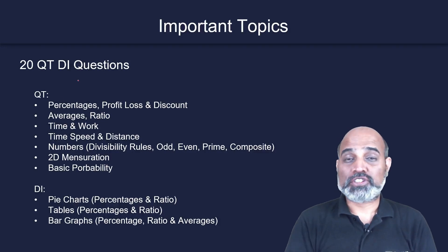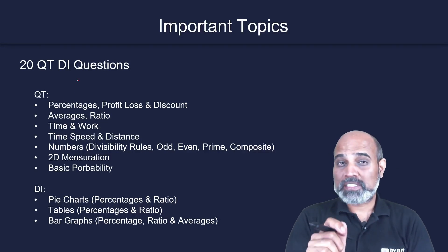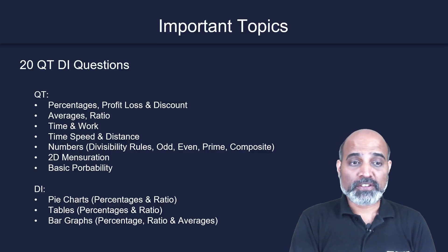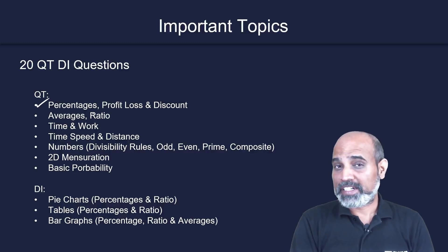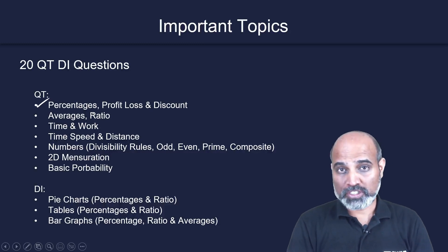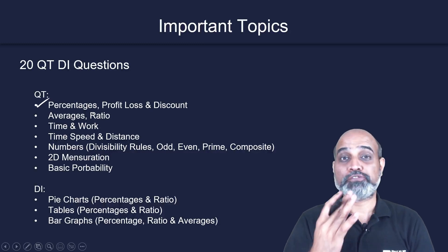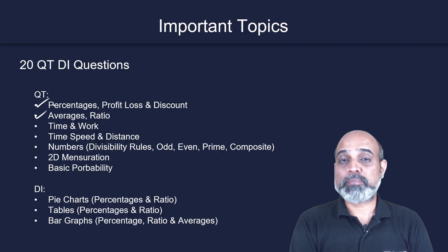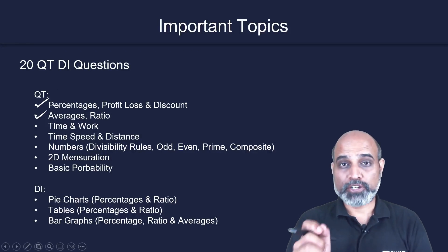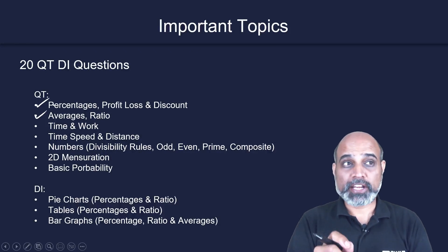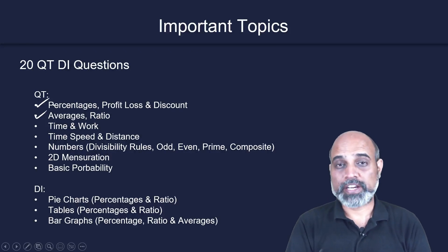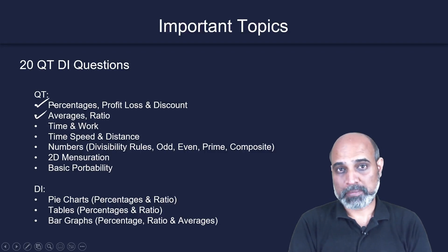The important topics under QT: the first one is percentages, profit, loss, and discount — it's very important. The second one is averages and ratio. Ratio is asked a lot when it comes to the QT part of the CMAT exam.